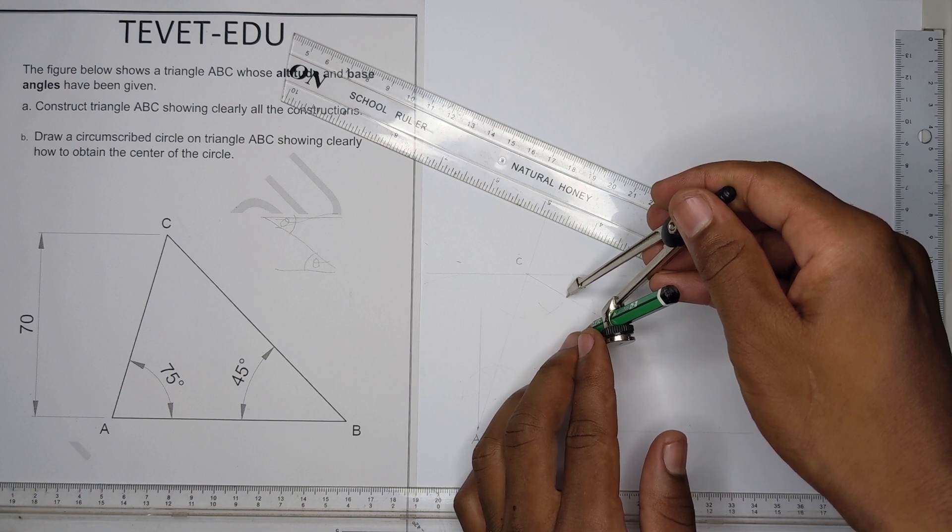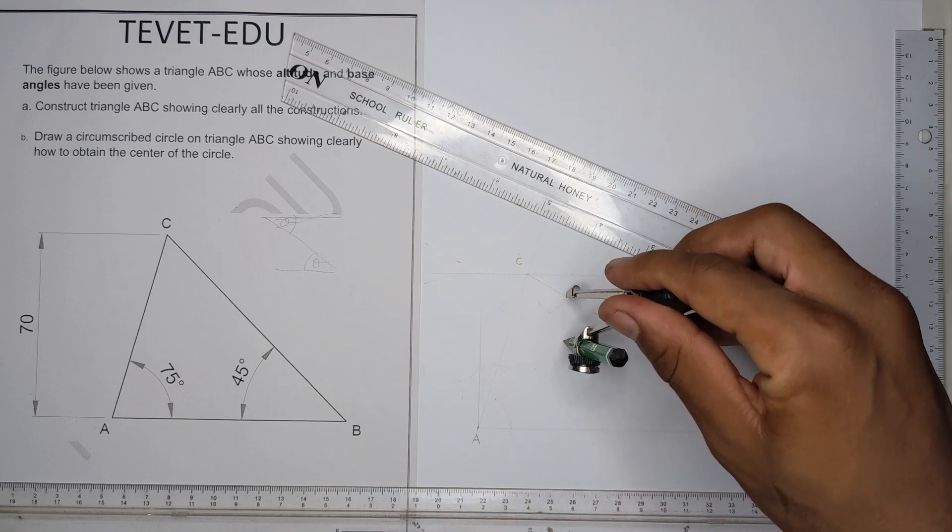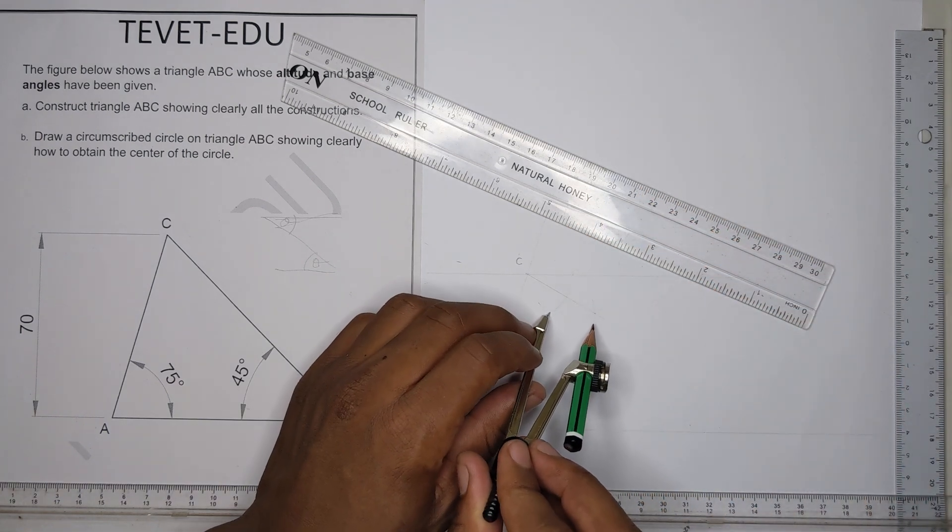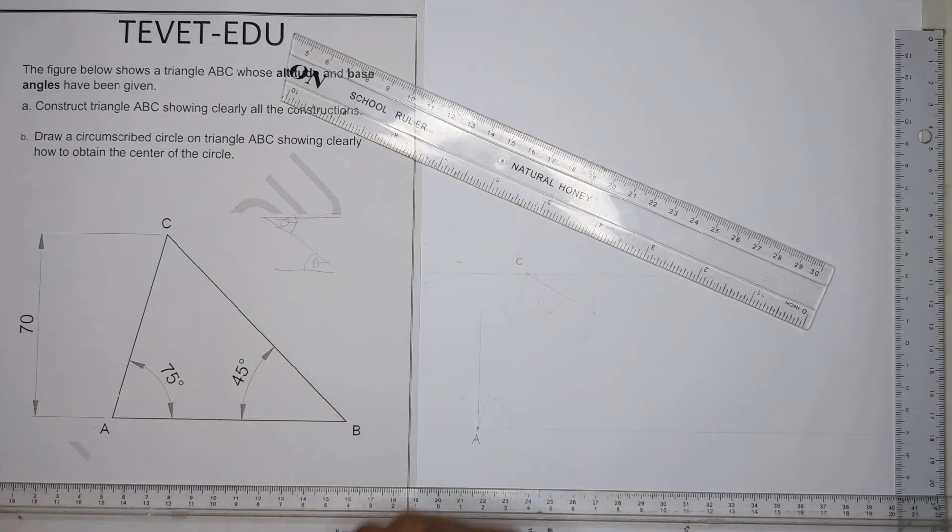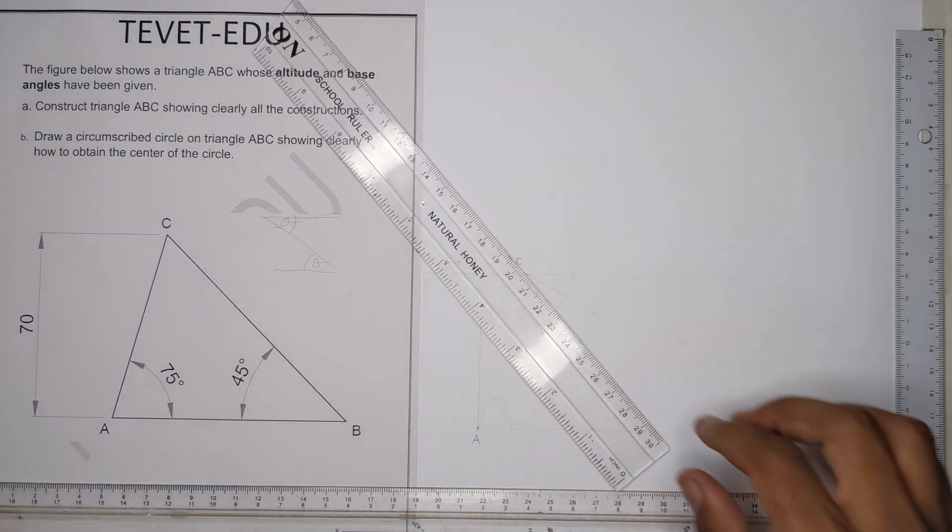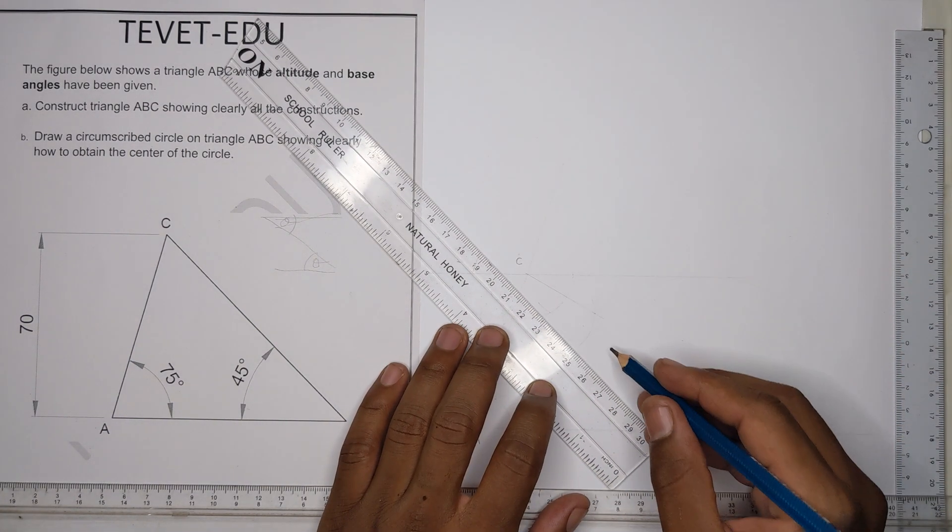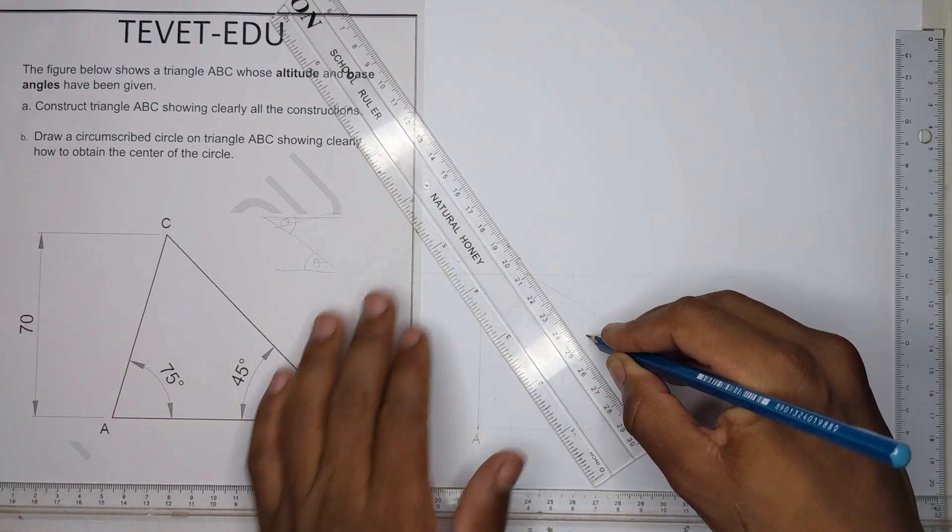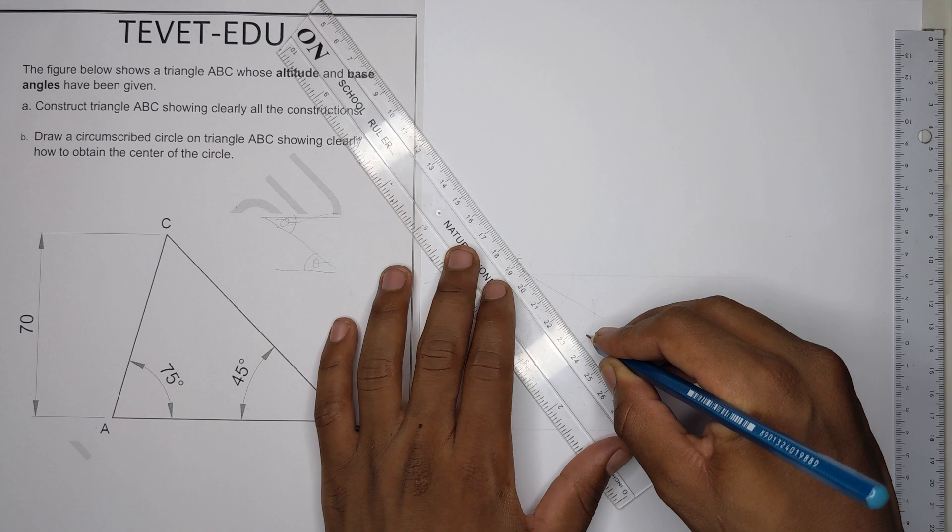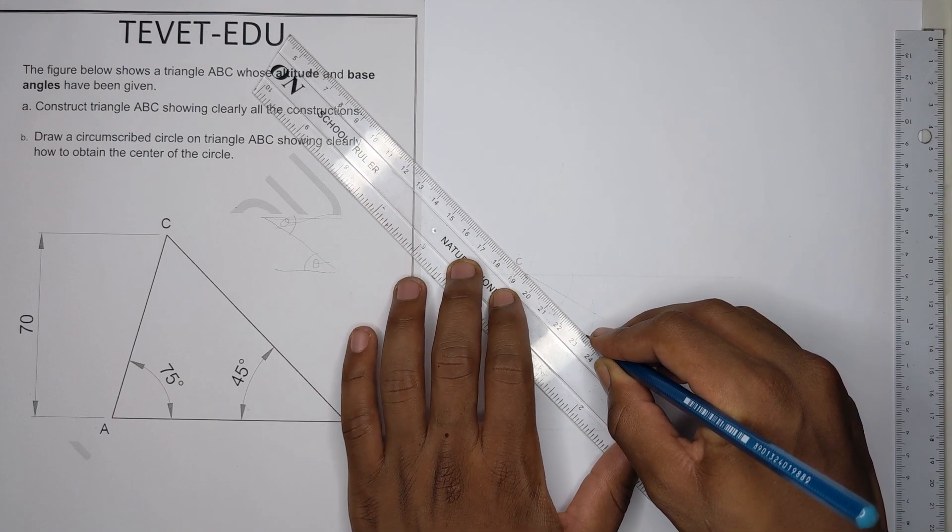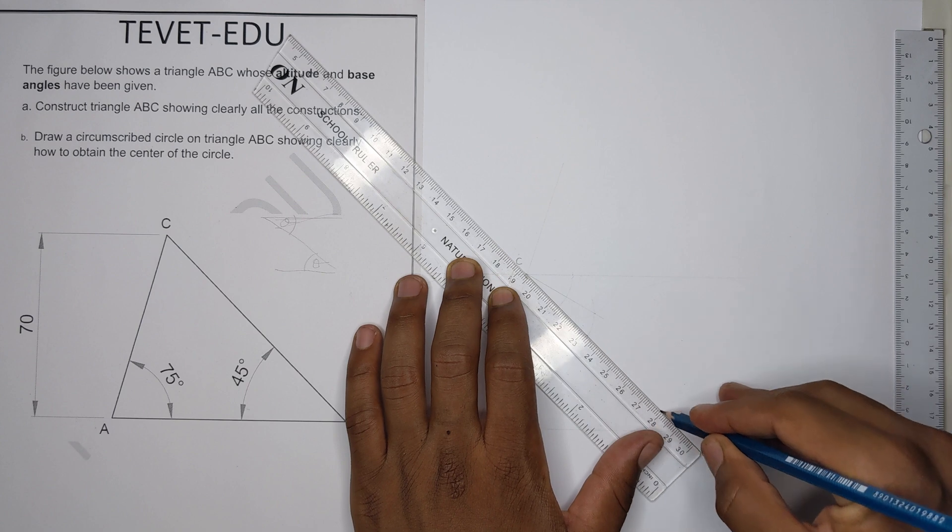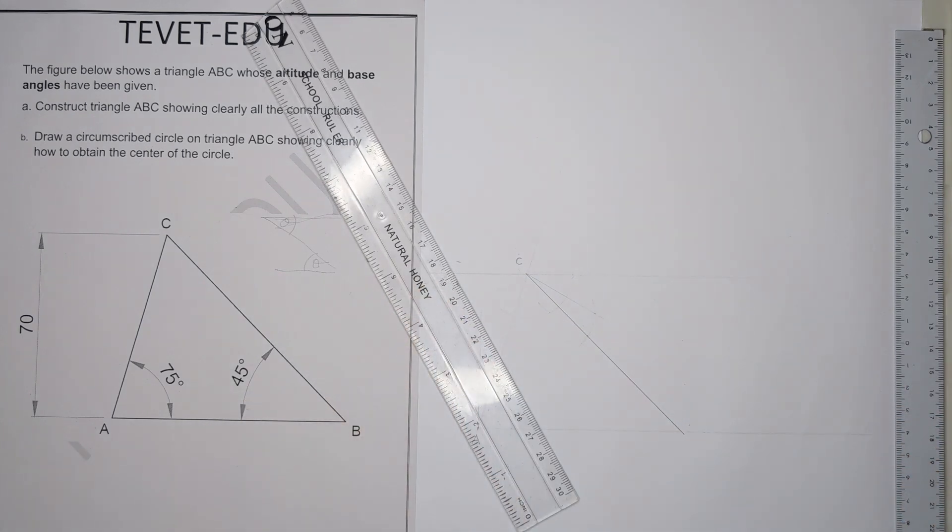We bisect 30 and 60 like that. Now we have our 45. So from this point we can draw a line to meet with the baseline at some point there, which will be our point B.